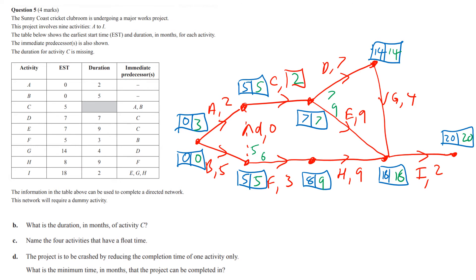Highlighting the critical path nodes, we can identify the path that includes all the matching EST/LST values. The activities that don't have a float time — i.e., not on the critical path — are A, F, H, and E. I initially said D by mistake — it should be E. So A, F, H, and E are the ones not highlighted on the critical path.